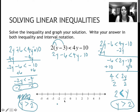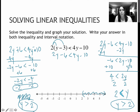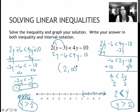To graph it, it would be an open circle on 2 — open bracket on 2 — with all of the numbers greater than that shaded. The answer in inequality notation is y is greater than 2; in interval notation it's from 2 all the way up to infinity.